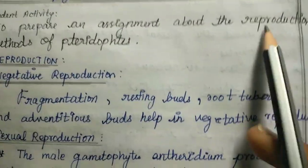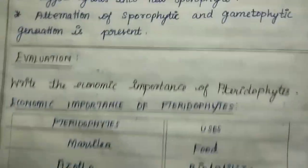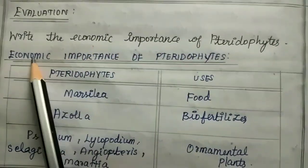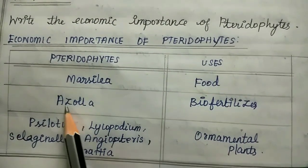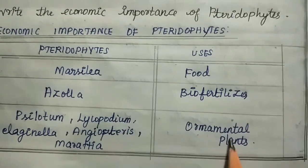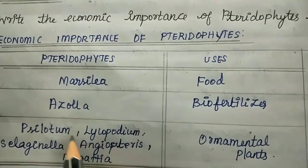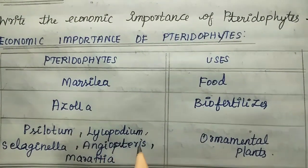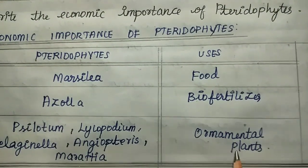Student activity: reproduction method of pteridophytes. Evaluation question two: write the economic importance of pteridophytes. Marsilea is used as food. Azolla is used as bio-fertilizer. Ornamental plants include Selaginella, Lycopodium, Selaginella, and Adiantum.